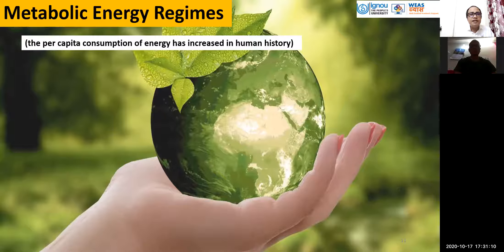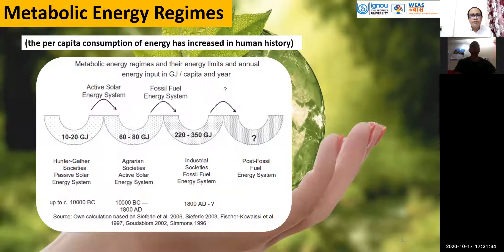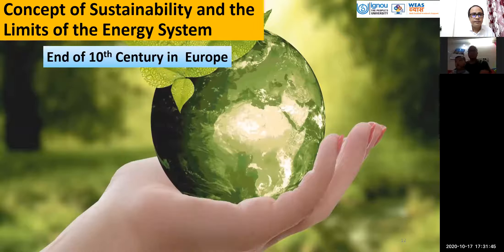The metabolic energy consumption — that is, per capita energy consumption — has increased greatly in human society. From 110–120 gigajoules in hunter-gatherer society to 220–350 gigajoules in industrial society. This is how our culture shifted from agriculture to industrial, and how our per capita consumption increased.